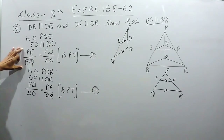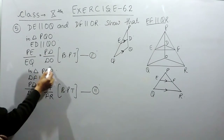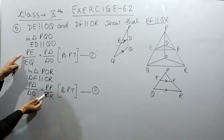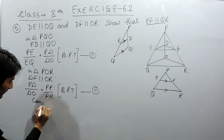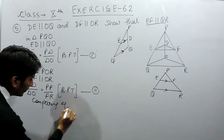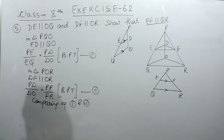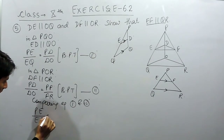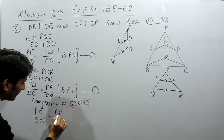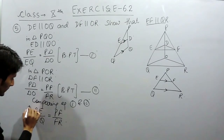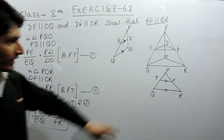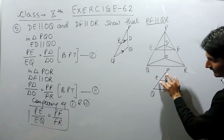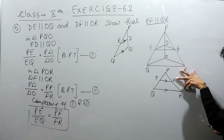Now, comparing equation one and equation two, we see that PD upon DO appears in both. Since one side is equal, the other sides must also be equal. Therefore, we conclude that PE upon EQ is equal to PF upon FR. We have proved that in triangle PQR, the ratio between PE and EQ equals the ratio between PF and FR.